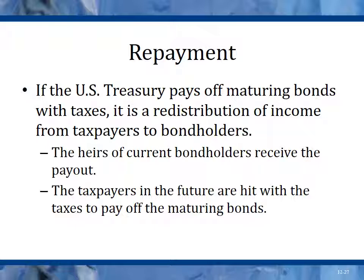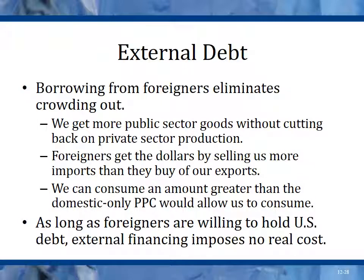Repayment: if the U.S. Treasury pays off maturing bonds with taxes, it is a redistribution of income from taxpayers to bondholders, shifting money from taxpayers to bond holders who are also probably taxpayers — a very cyclical thing. External debt: borrowing from foreigners eliminates crowding out, so we get more public sector goods without cutting back private sector production. China holds a tremendous amount of our debt right now, which helps us because we're getting their money into our economy rather than the Federal Reserve buying our own debt. It's much healthier if other countries hold our debt.